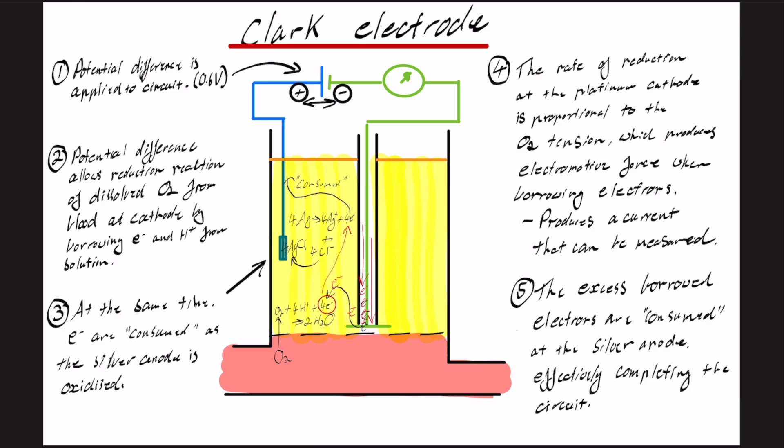So you can see here that in red, our electrons have come down, provided electrons within the reduction reaction that happens with oxygen. These electrons are then also provided to the silver, which becomes charged with the electrons and consumed and then goes through the circuit and completes the circuit.